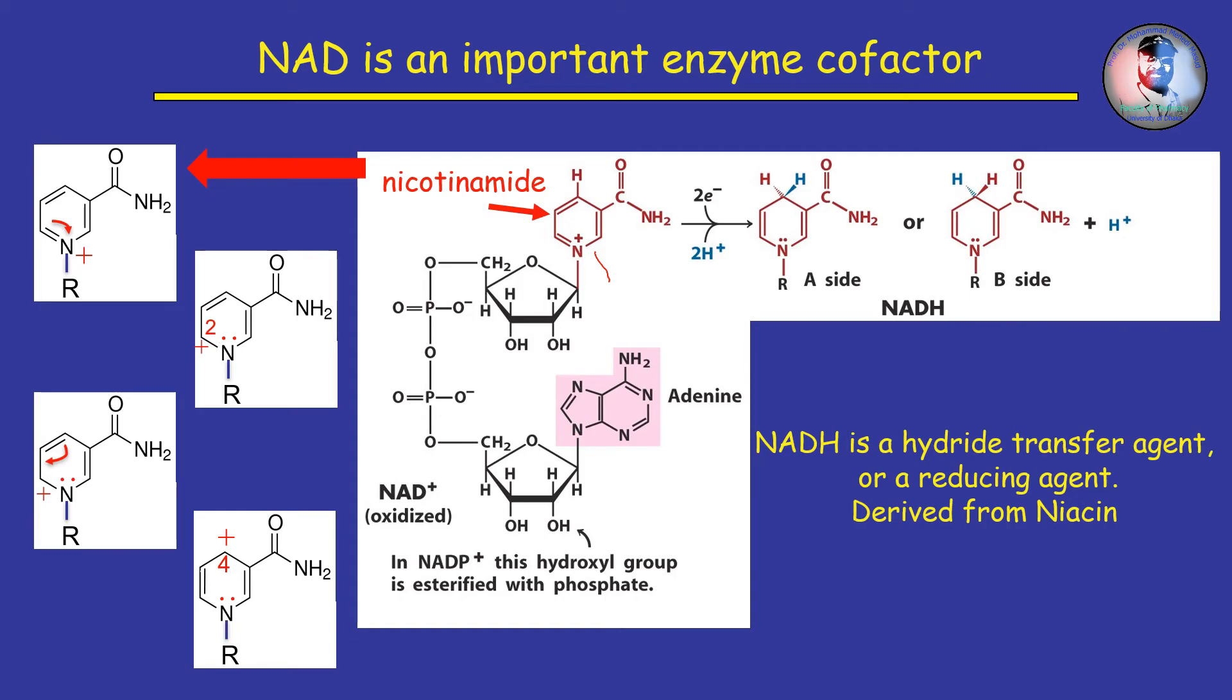NAD+ is an oxidizing agent. It accepts electrons from other molecules and becomes reduced. This reaction forms NADH which can then be used as a reducing agent to donate electrons. These electron transfer reactions are the main function of NADH.